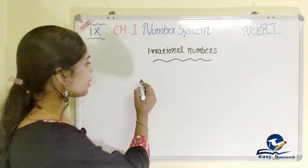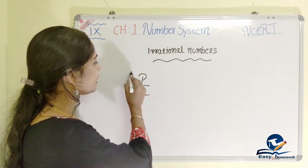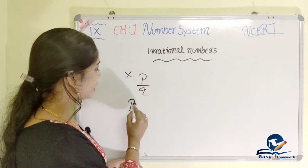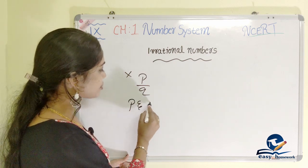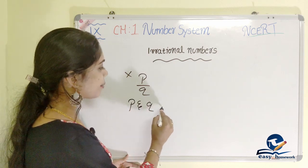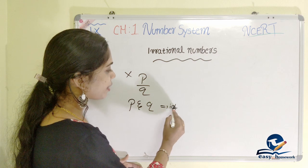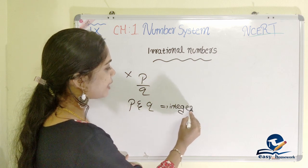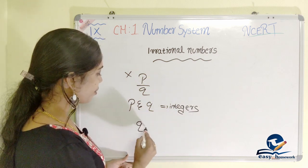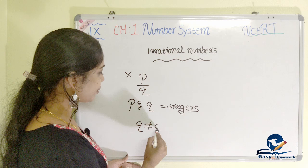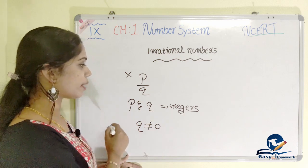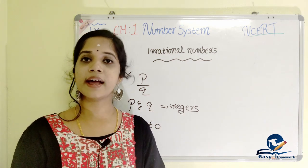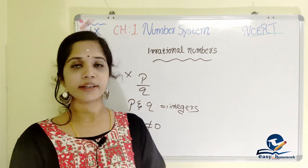That is, the p by q formula where q is not equal to 0. What are the conditions that must be satisfied? This way, numbers that cannot be expressed in p by q form are called irrational numbers.